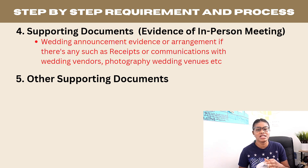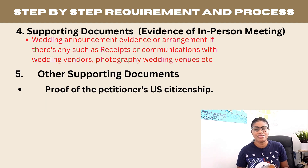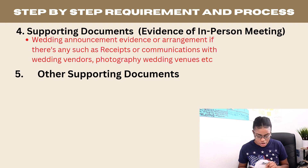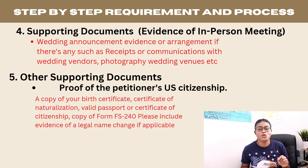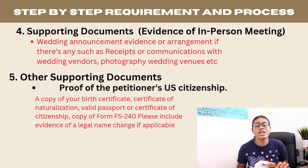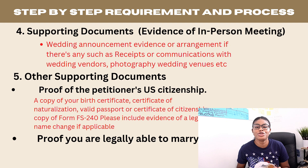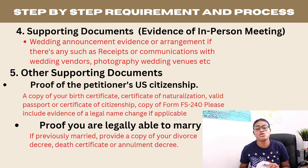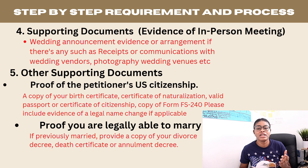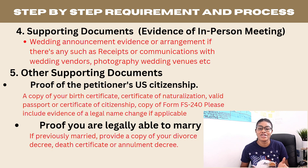Other supporting documents outside of relationship evidence include: proof of the petitioner's citizenship, which can be a valid passport, certificate of naturalization, certificate of citizenship, or birth certificate if born in the United States — and if there has been a name change, include a copy of that. You also need to show that you are single; if previously married, provide a copy of the divorce decree or a death certificate if applicable.